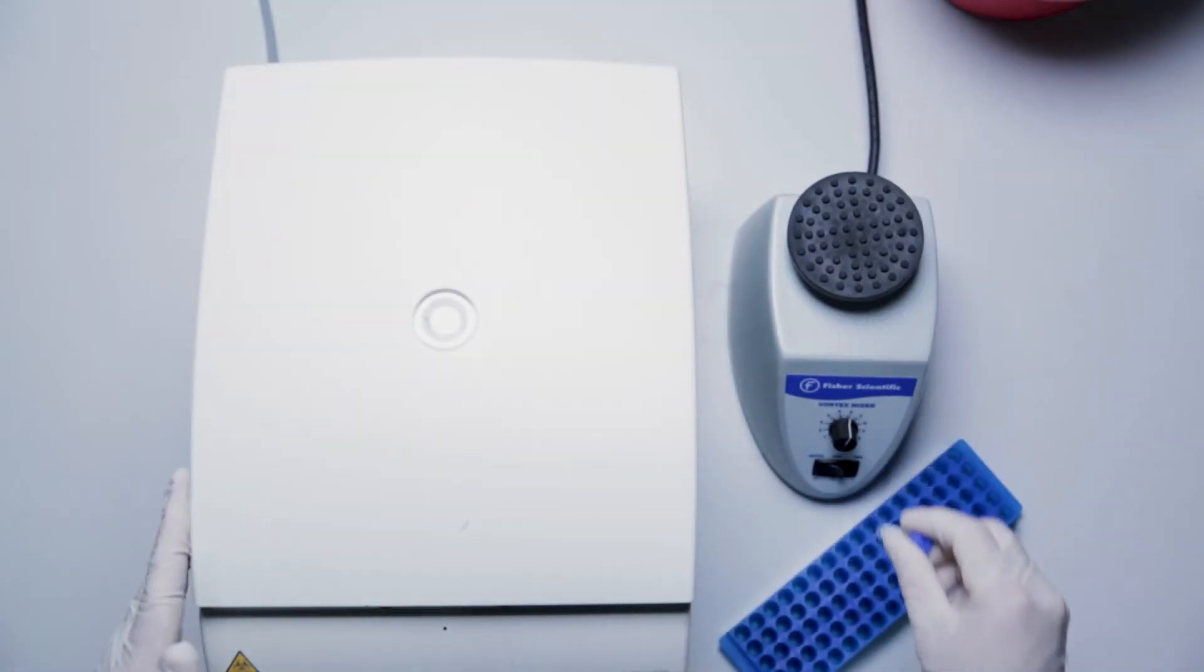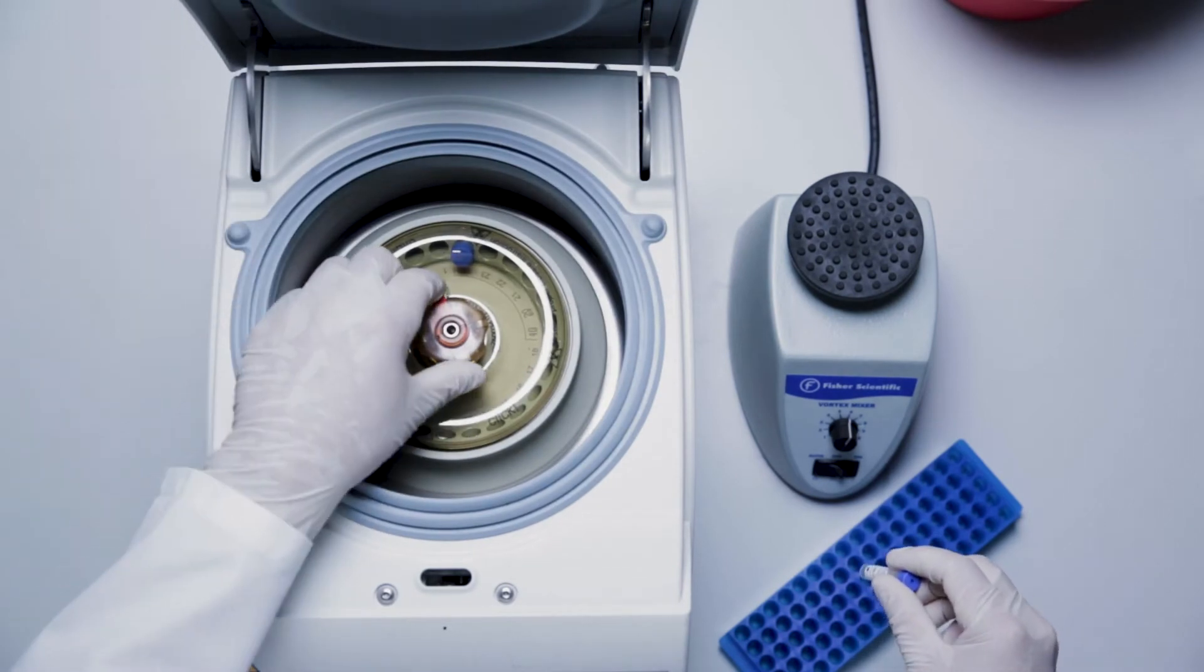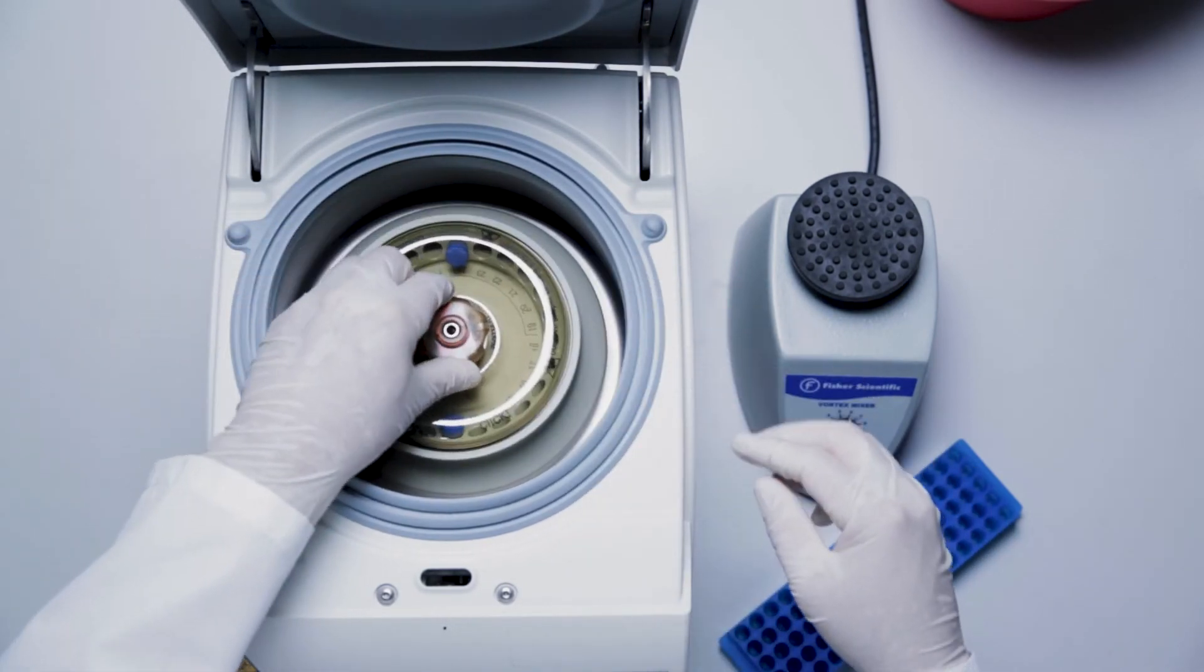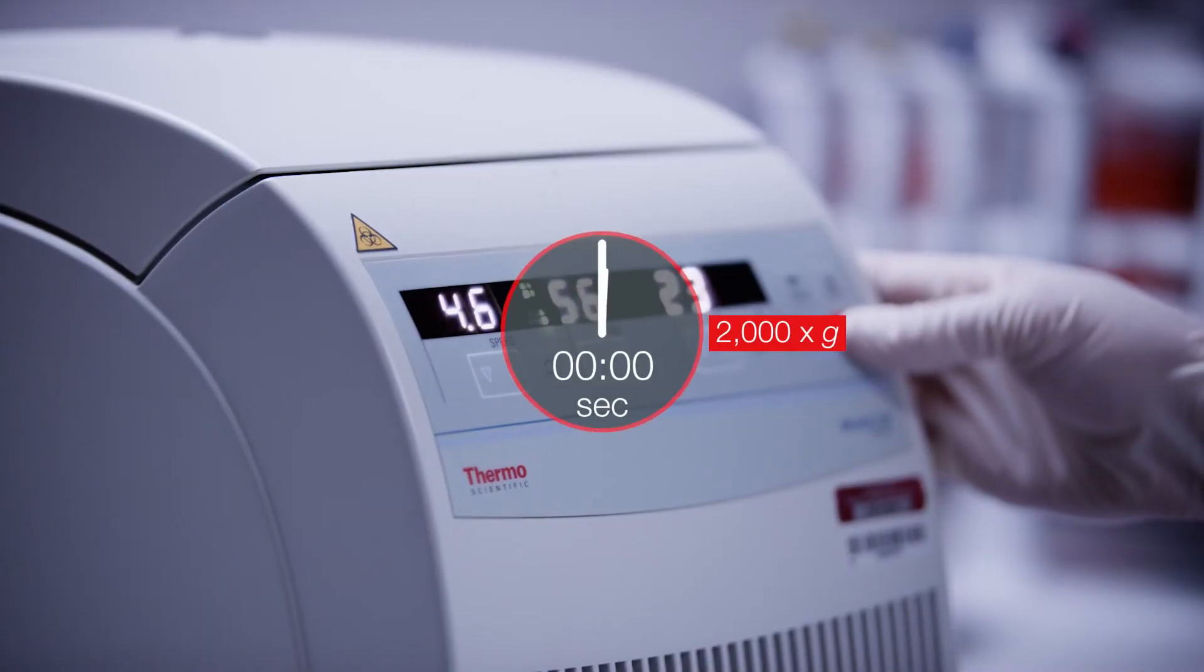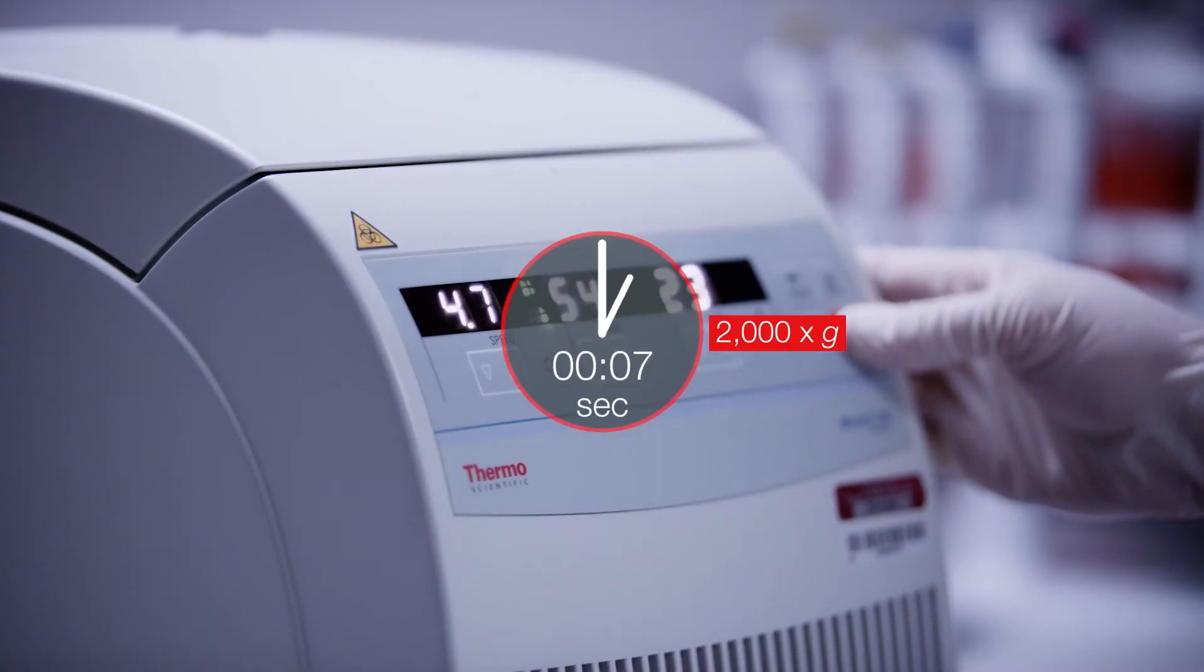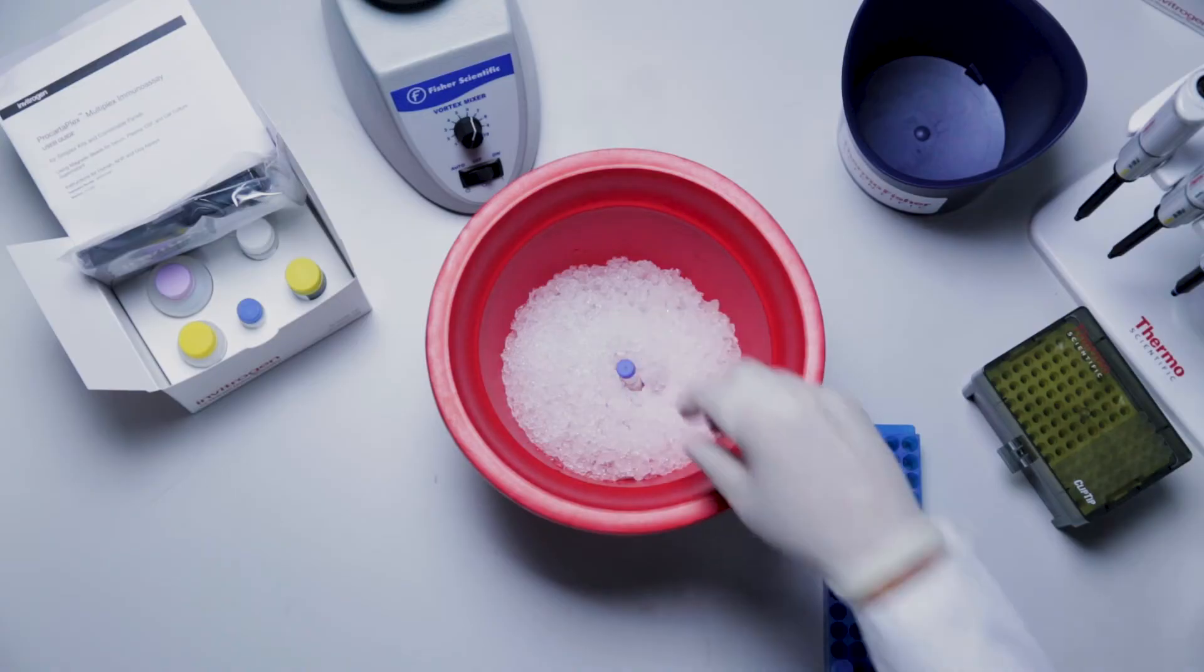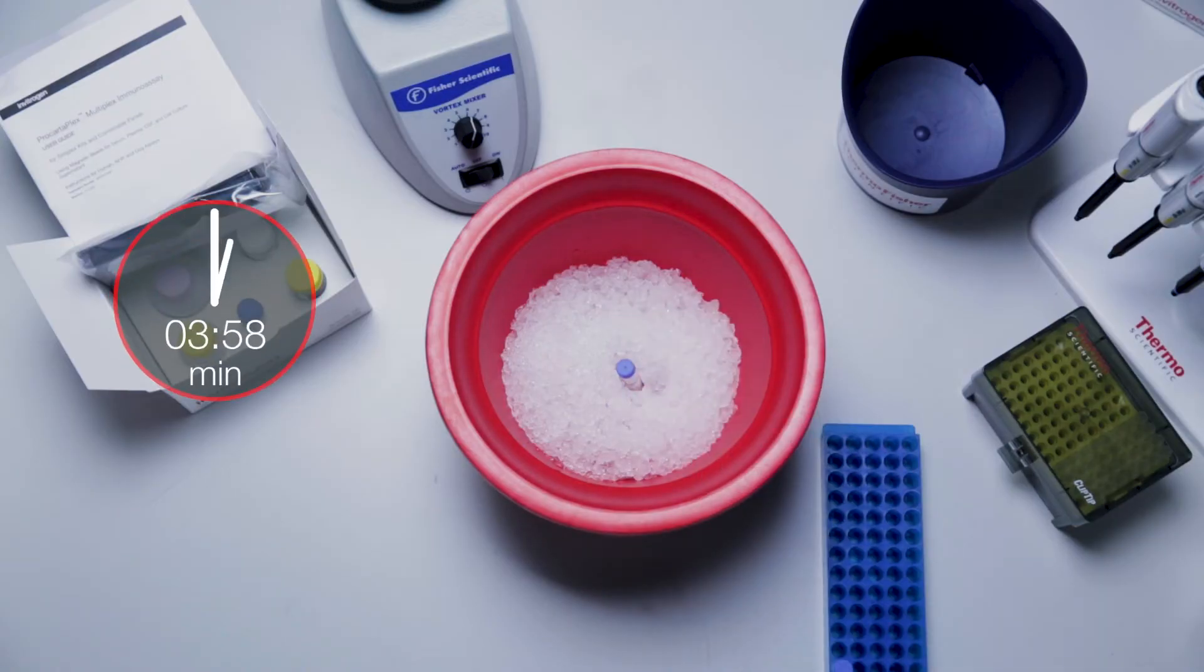Vortex the sixth standard vial at high speed and then centrifuge at 2000 g for 10 seconds to collect contents at the bottom of the vial. Incubate on ice for 10 minutes to ensure complete reconstitution.